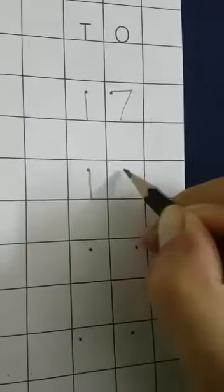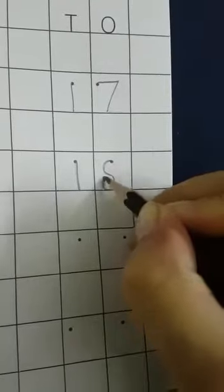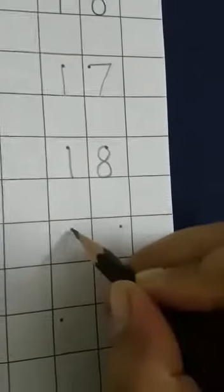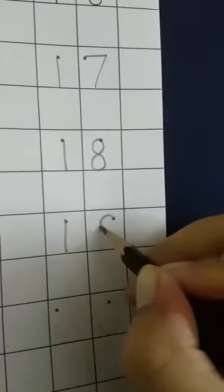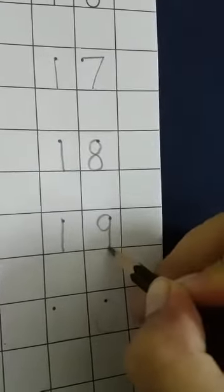1 and 8 makes 18. Then 1 and 9 makes 19.